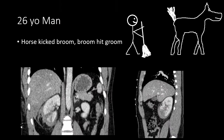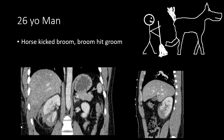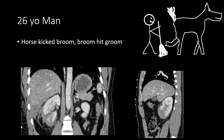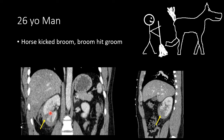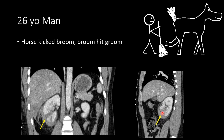In the first case example, a groom was working with a horse, the horse kicked the broom, the broom hit the groom, and he presented with bruising to the right abdomen. Looking at the right kidney, we can see a hematoma along the kidney, and in addition, two clefts in the renal parenchyma, both consistent with grade three lacerations. There is also extension into the renal hilum, creating risk for collecting system injury, making this at least a grade three laceration.